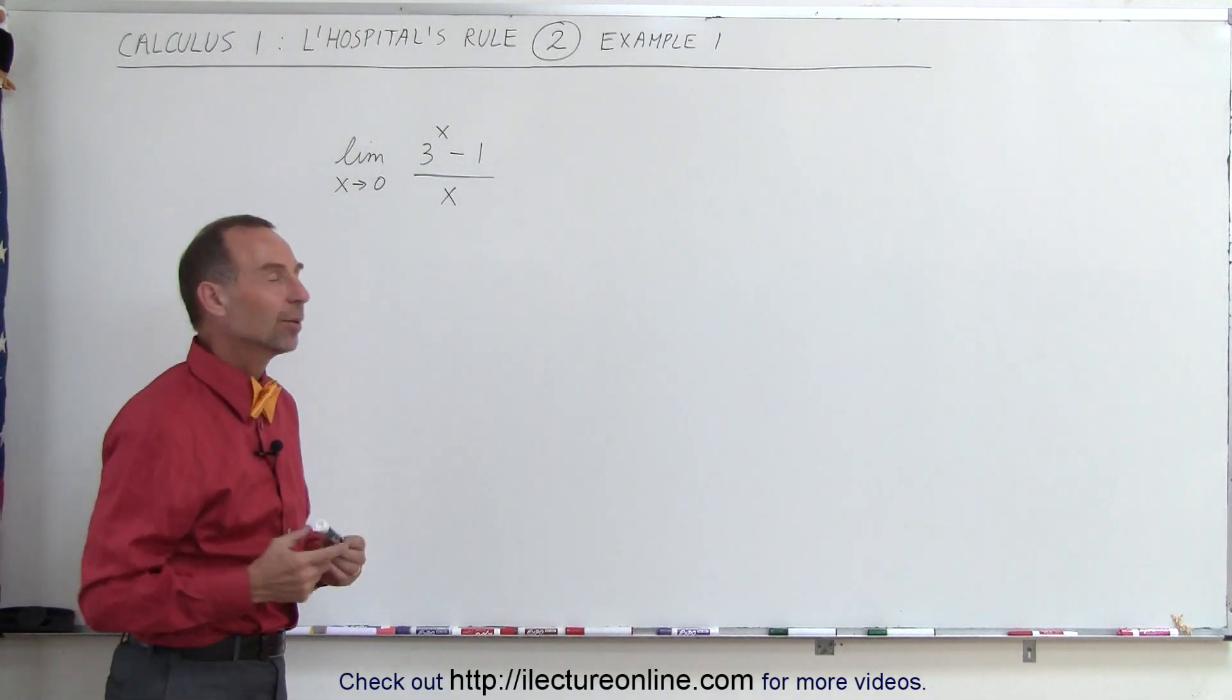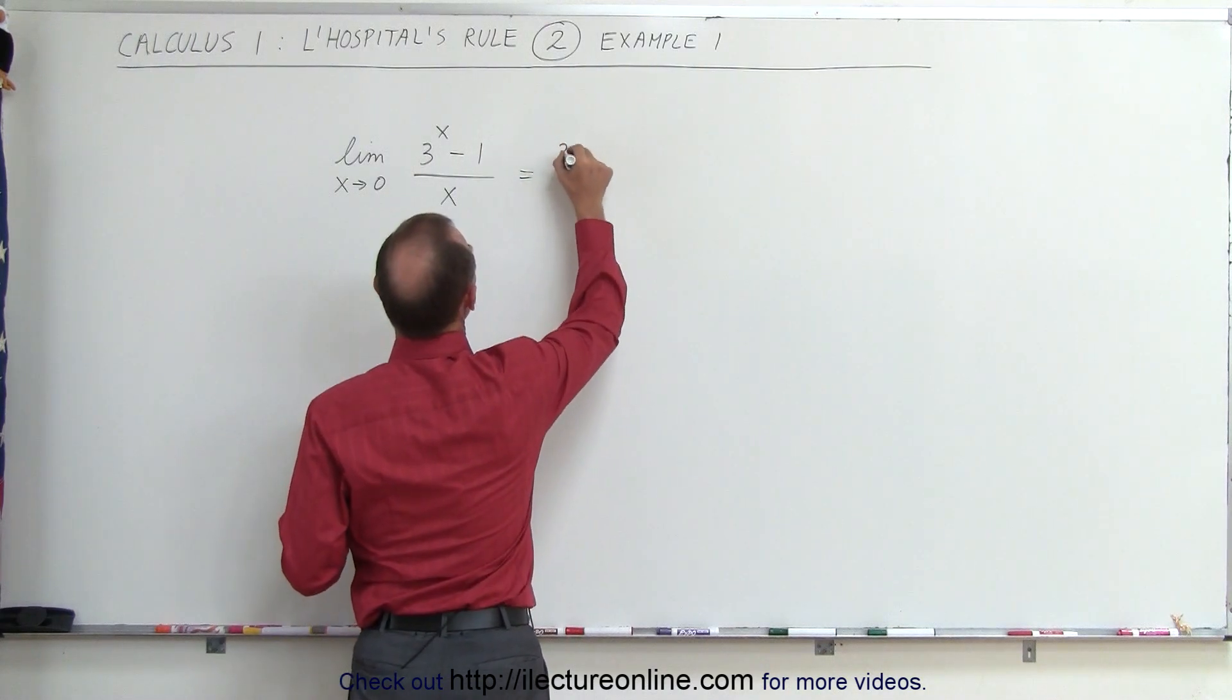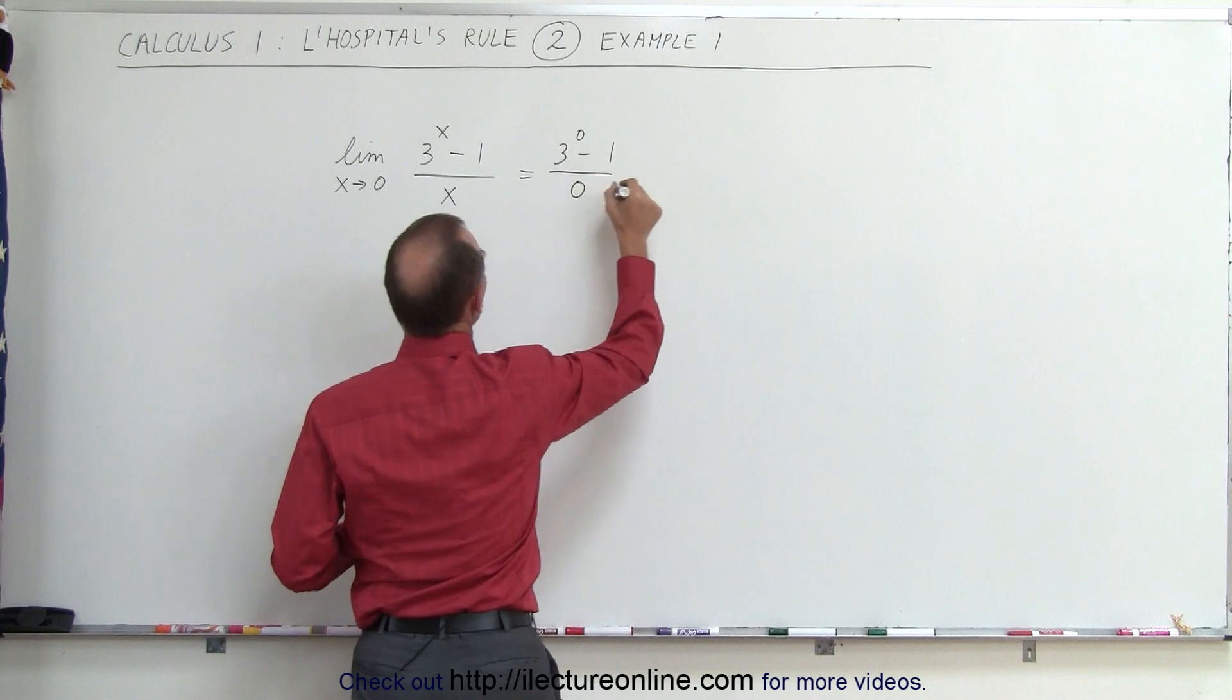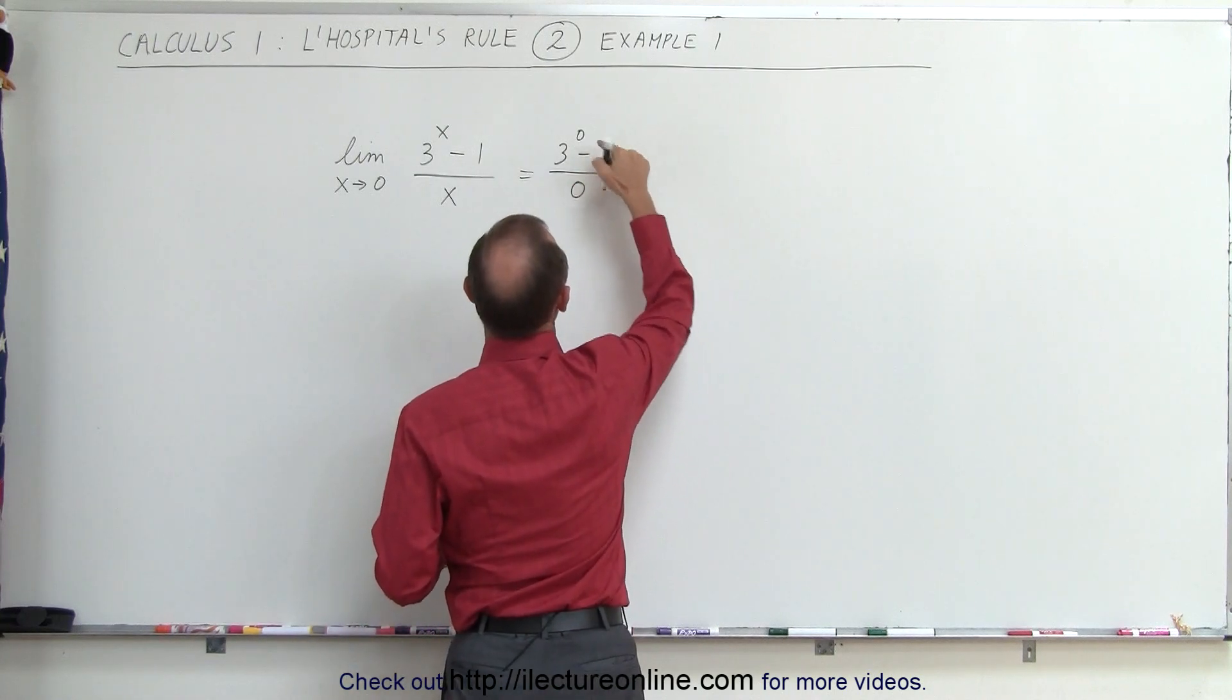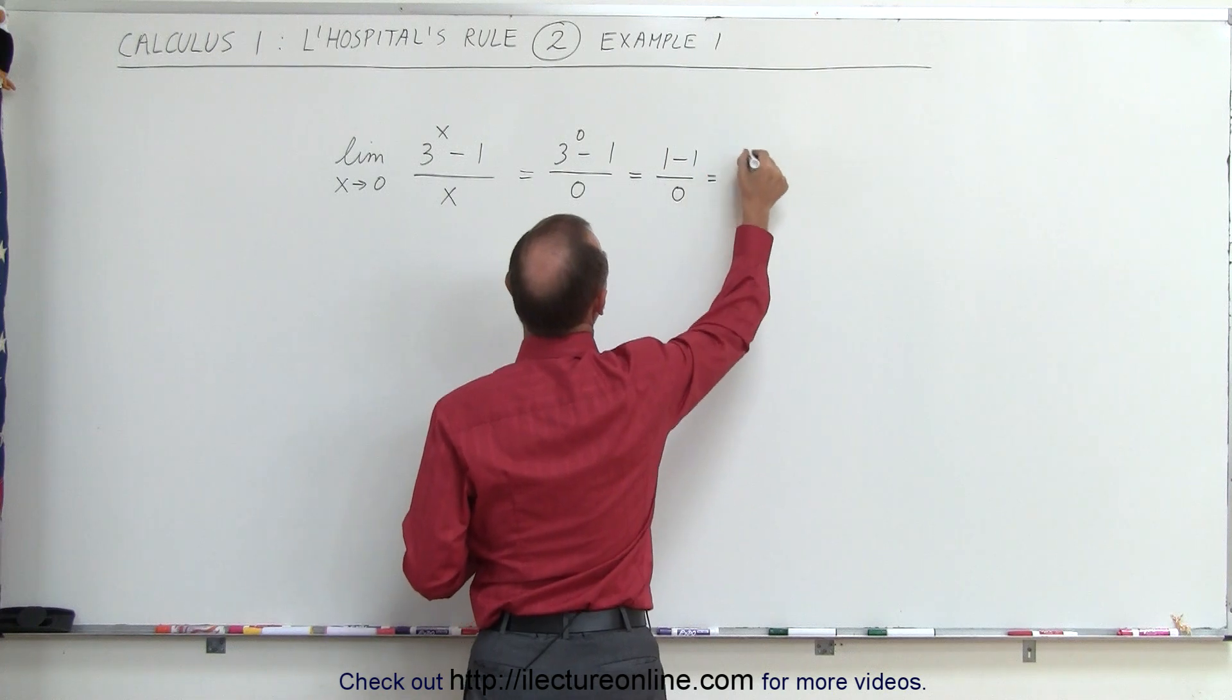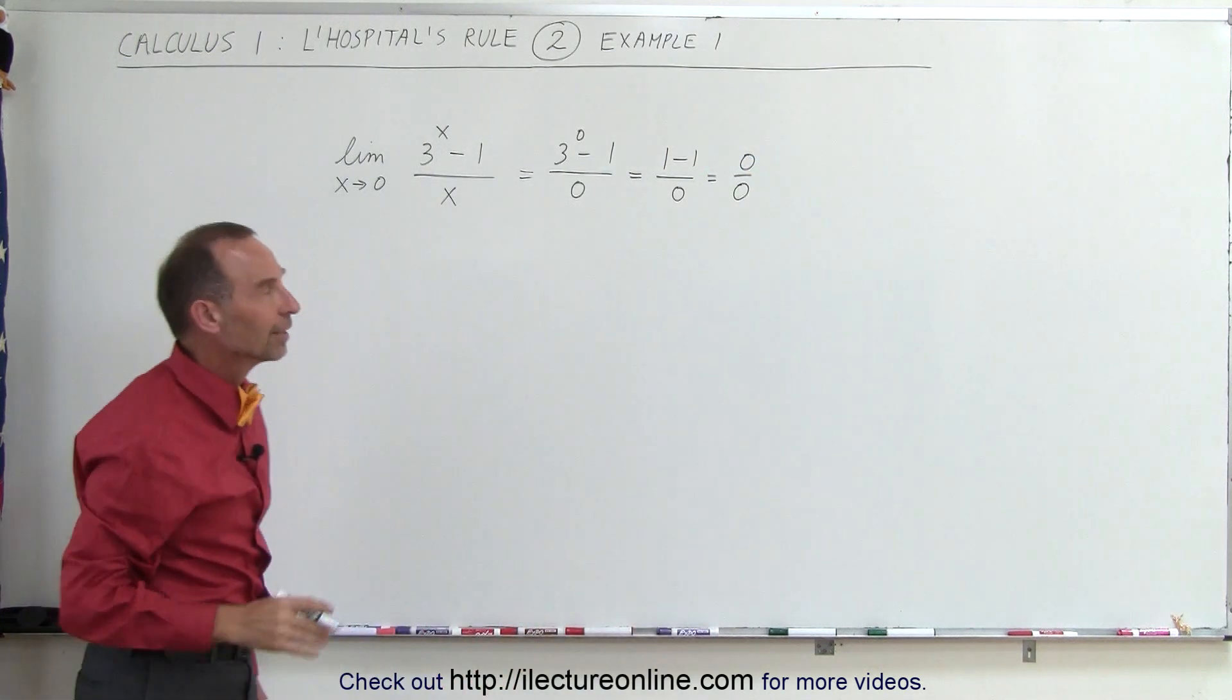Let's go ahead and try to see what we end up with. This would be equal to 3 to the 0 minus 1 divided by 0. Anything raised to the 0 power equals 1, so we get 1 minus 1 divided by 0. We get 0 divided by 0, which would be undefined.